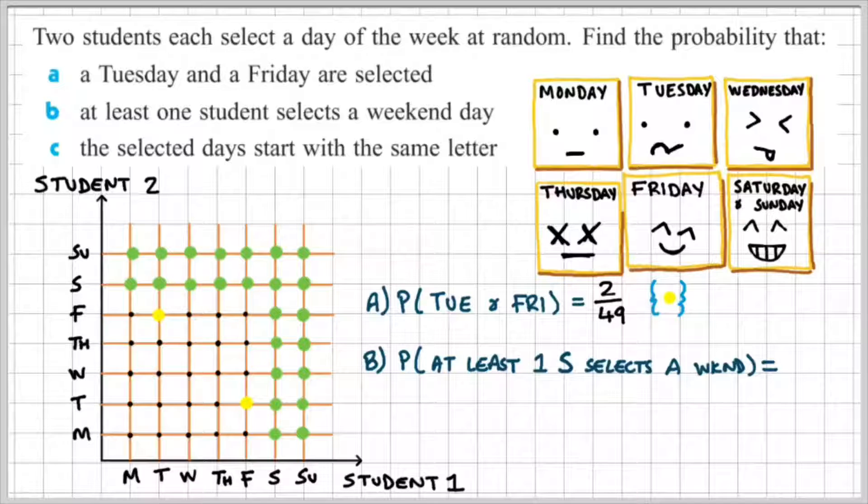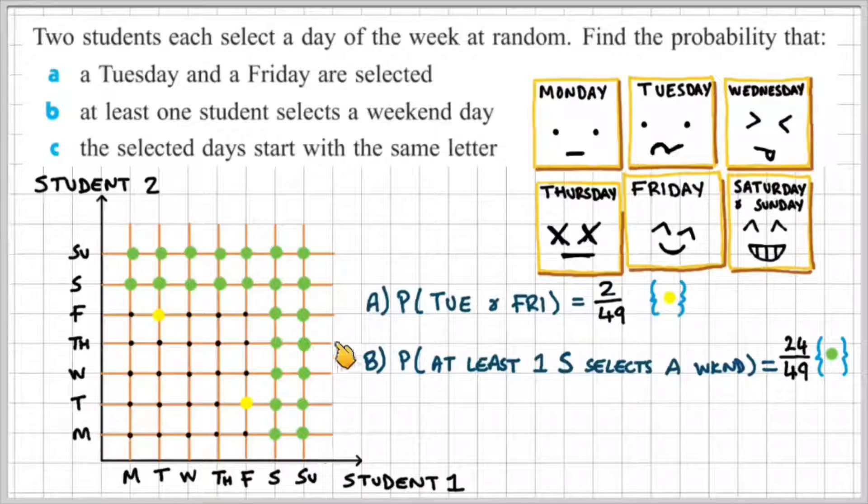Now bear in mind that there is an overlap. Student 1 and Student 2 both select a Saturday or a Sunday. So these four are overlap; we don't double them up, we count them as one option. So there are 24 favorable outcomes from a total of 49, indicated by my green dot on my grid.